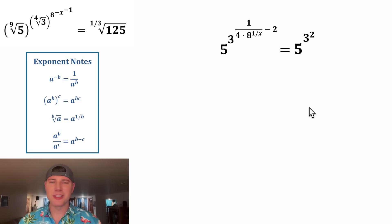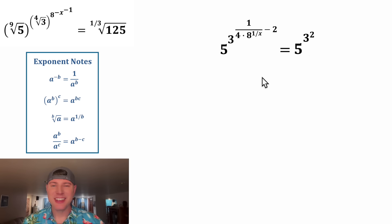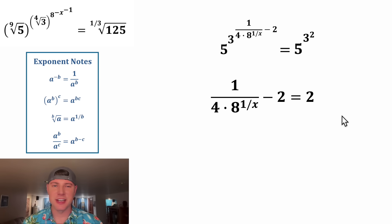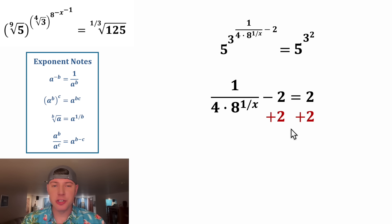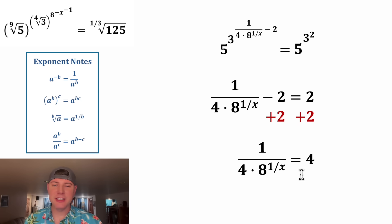Now let's compare the two sides. Since these bases match and they're not equal to one, negative one, or zero, this will only be true if this exponent equals this exponent. For the next step, let's add two to both sides. That gives us one over the quantity four times eight to the power of one over x, equals four.